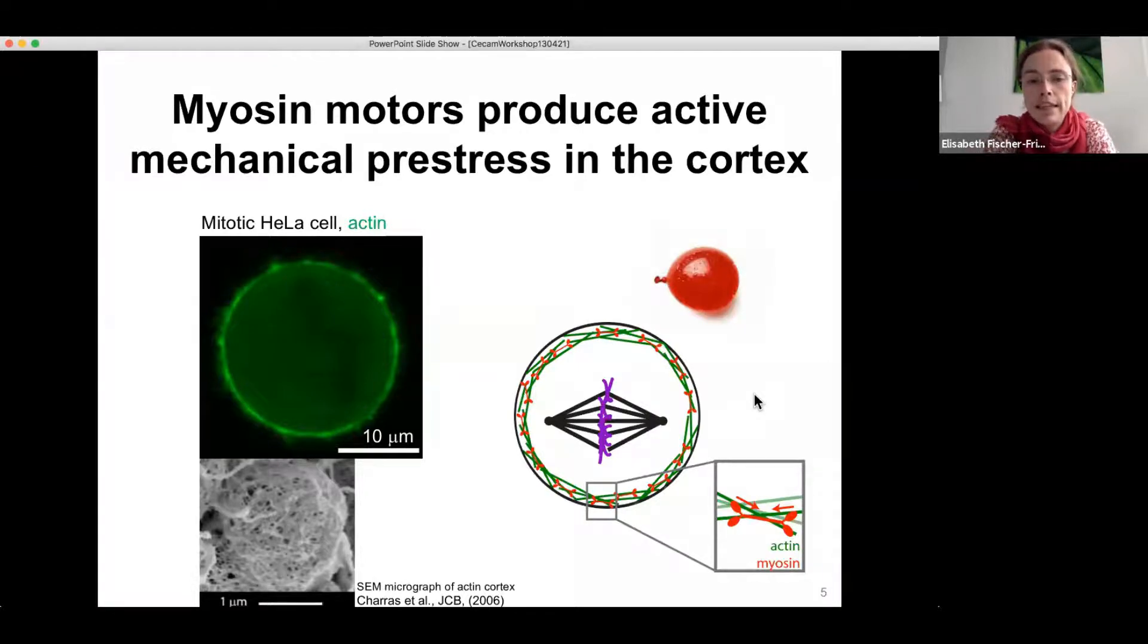So to a certain extent, we have here an analogy to a water balloon situation. So in the water balloon, we have the rubber sheet at the outside of the object being under mechanical tension. In the case of the balloon, this is due to mechanical strain. In the case of the actin cortex of the cell, this is due to these active motor proteins being present. And inside we have a hydrostatic pressure excess which is being balanced by this mechanical tension at the periphery.